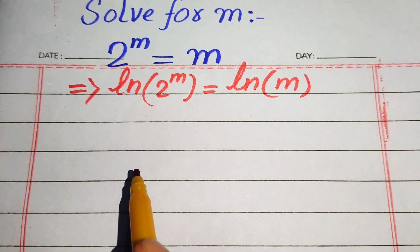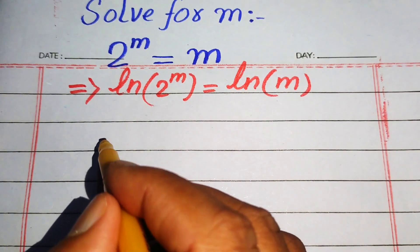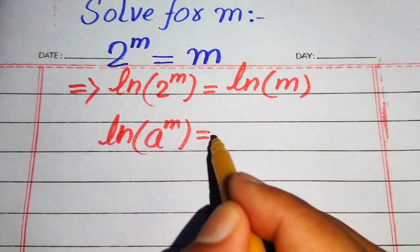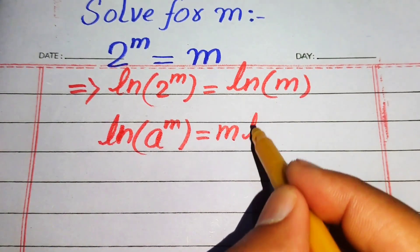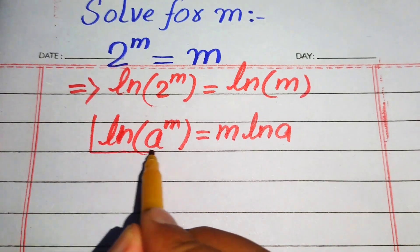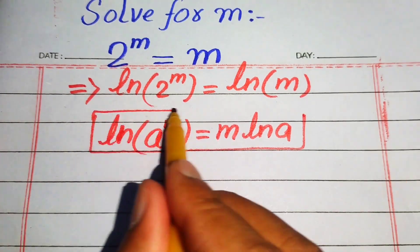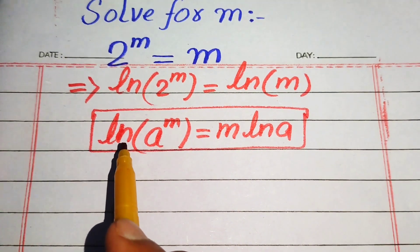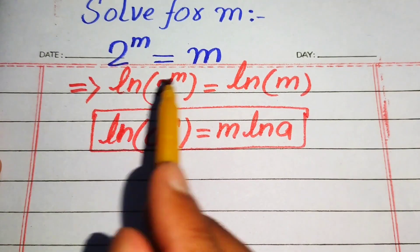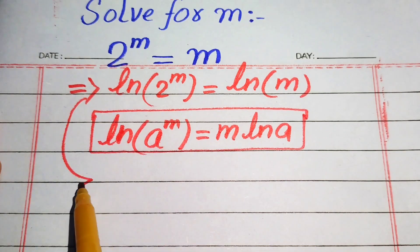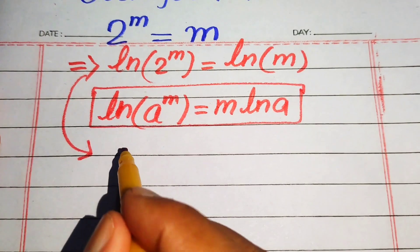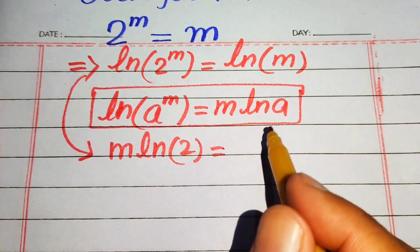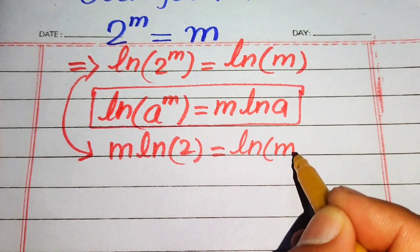In the next step we use the nice property of logarithm: the natural log of a to the power of m equals m times log a. According to this property, we move the exponent in front of the log. So this exponent m moves to the front and the expression is written as m times log 2 equals to log of m.